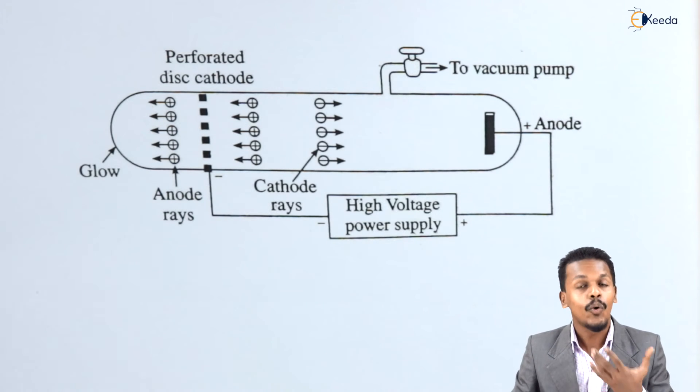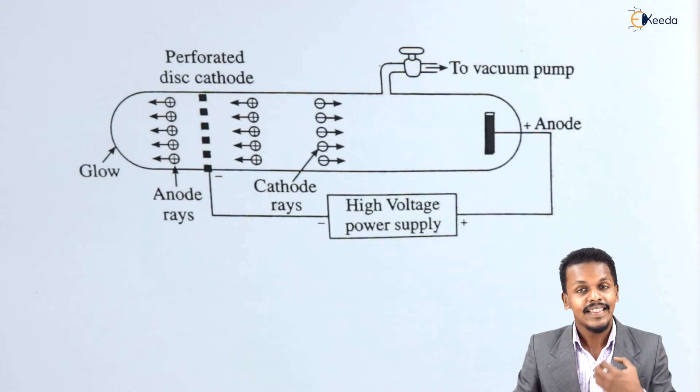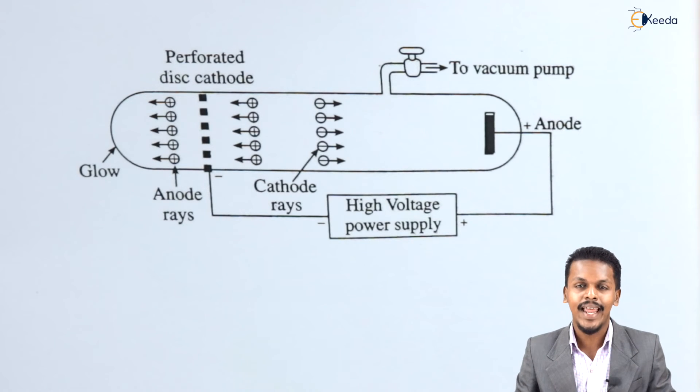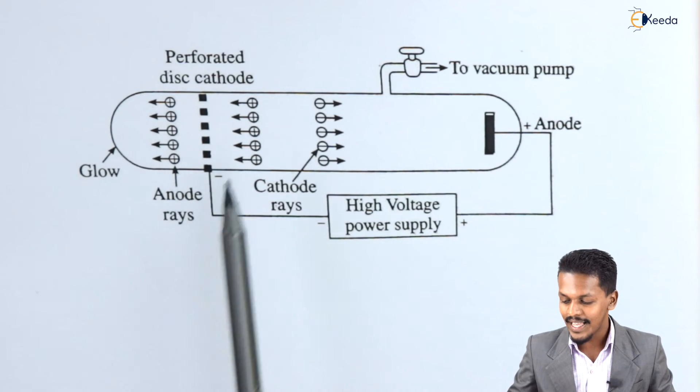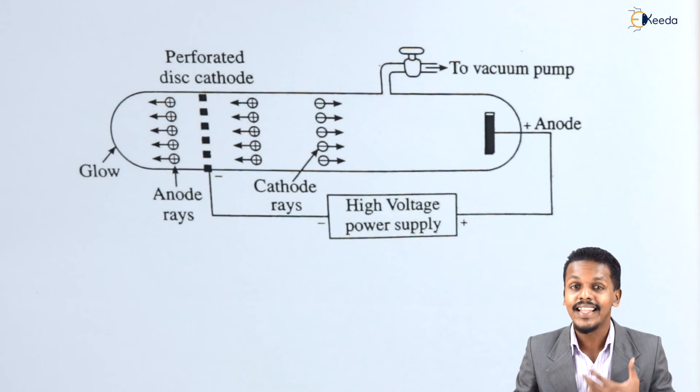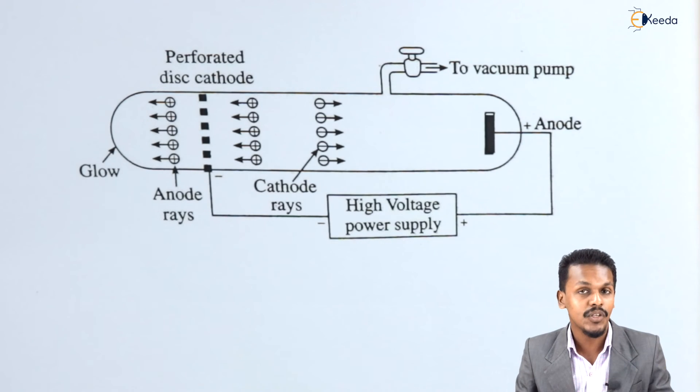And that is how basically Goldstein concluded that the anode rays are basically known as the canal rays because they are passing through this perforated disc and have a positive charge.